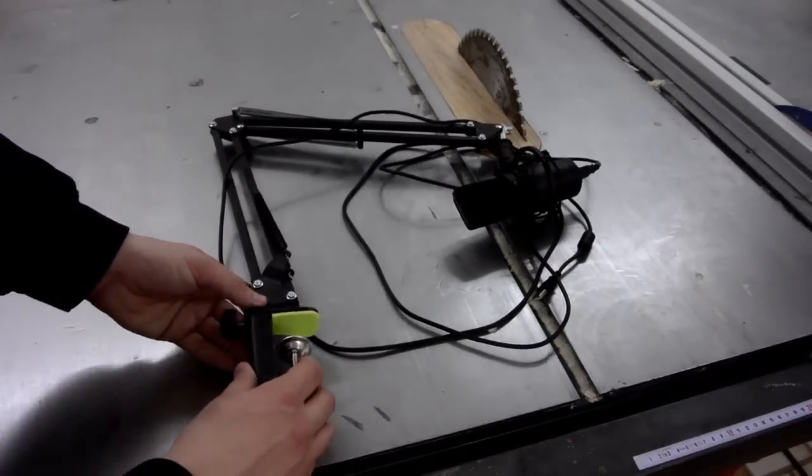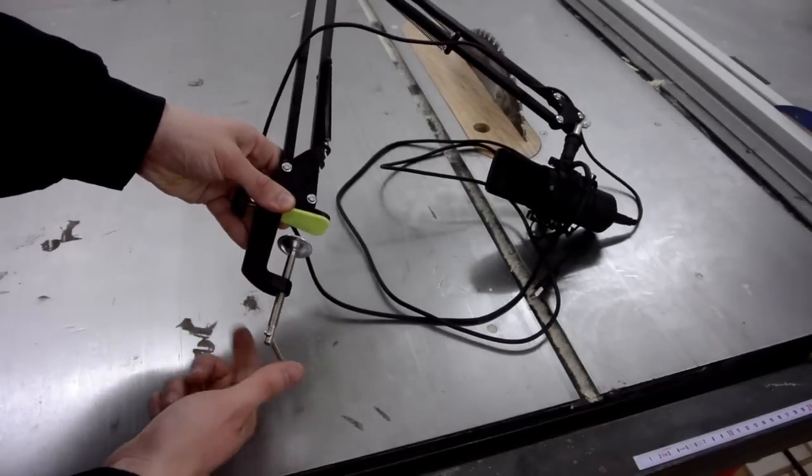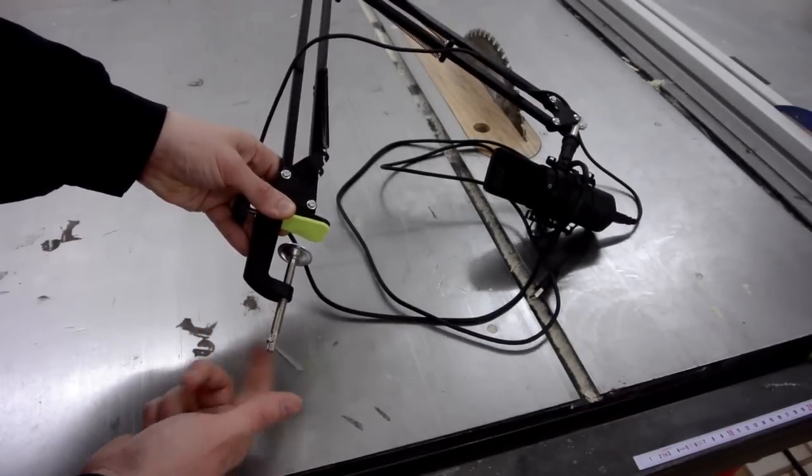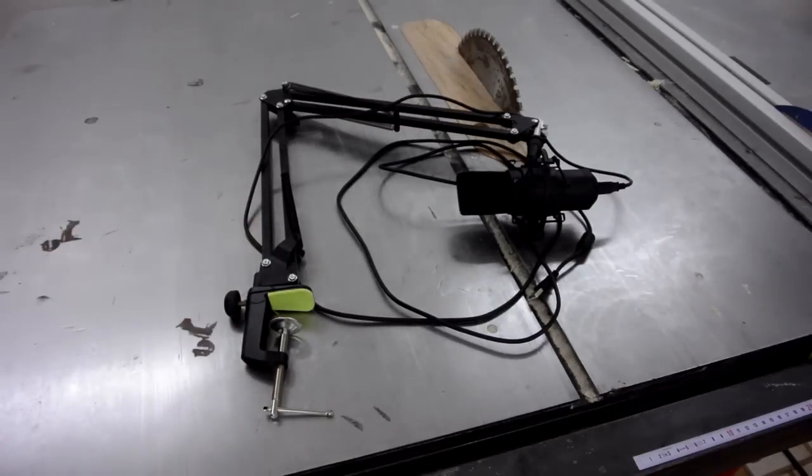My microphone arm came with this clampy thing which only allows it to be mounted directly to the edge of a table. So in this video I'm gonna show you how I made a base plate that allows me to position it on my desk wherever I want to.